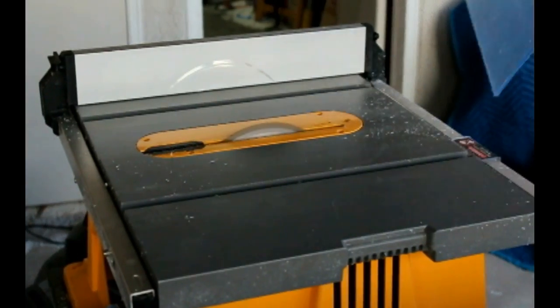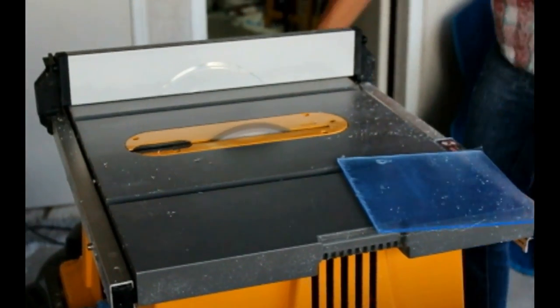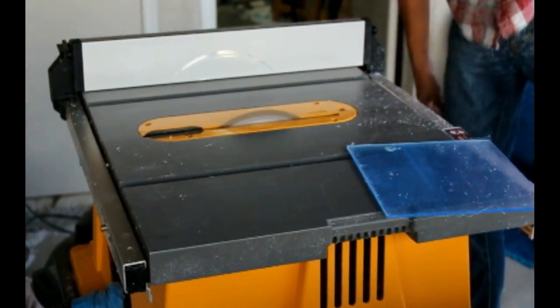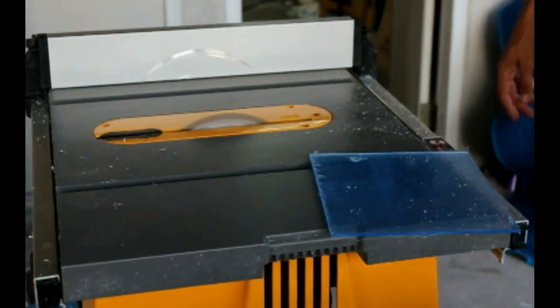This 10 inch 72 tooth carbide tip blade works for sheets as thin as 16th inch up to about 3 quarter inch plastic sheeting.